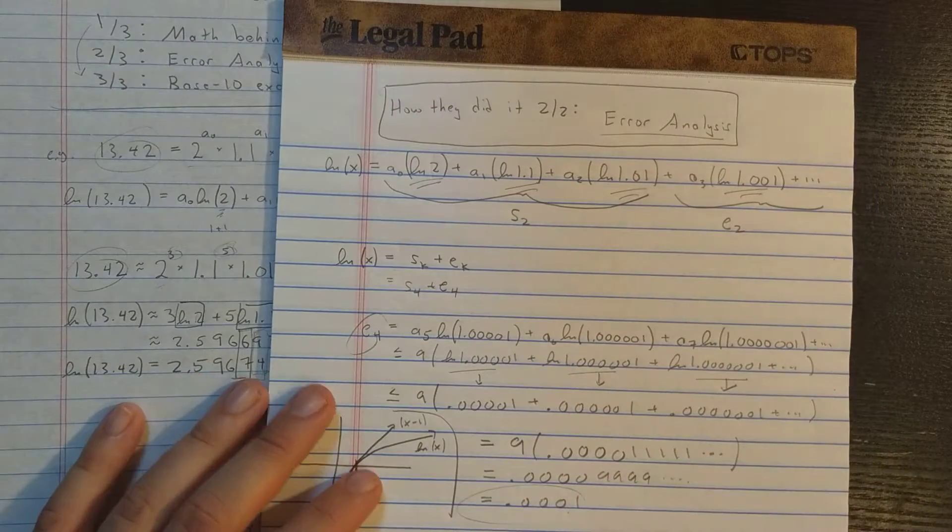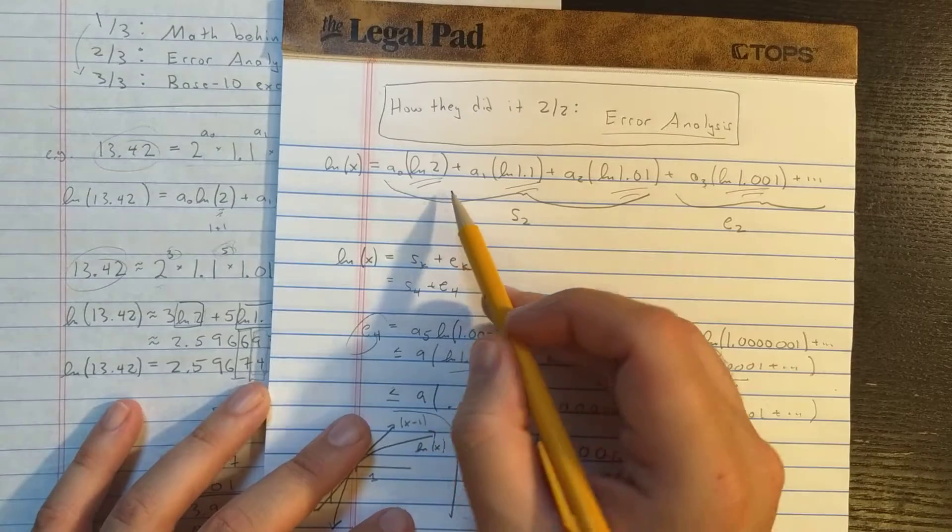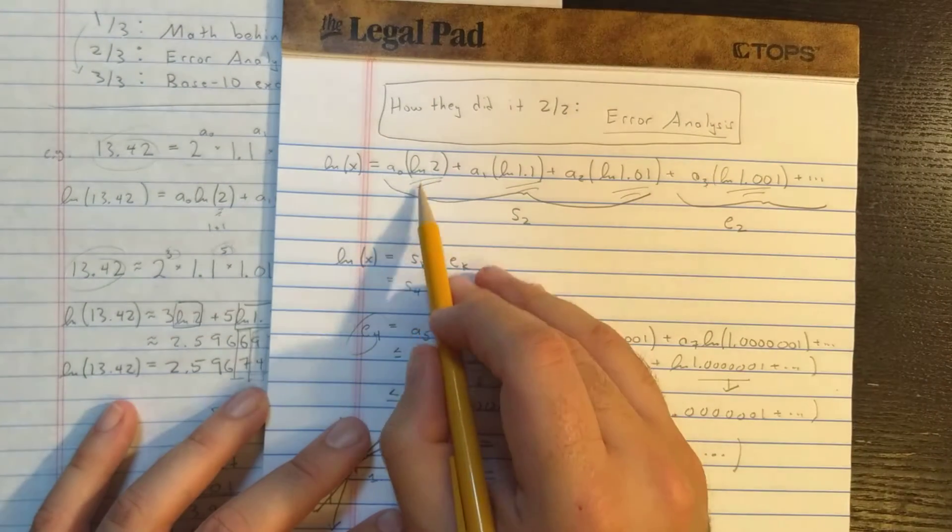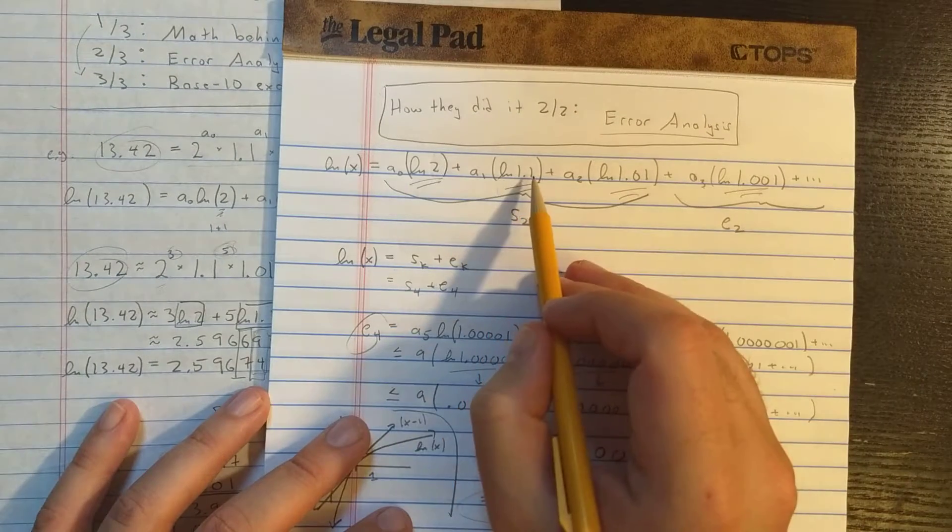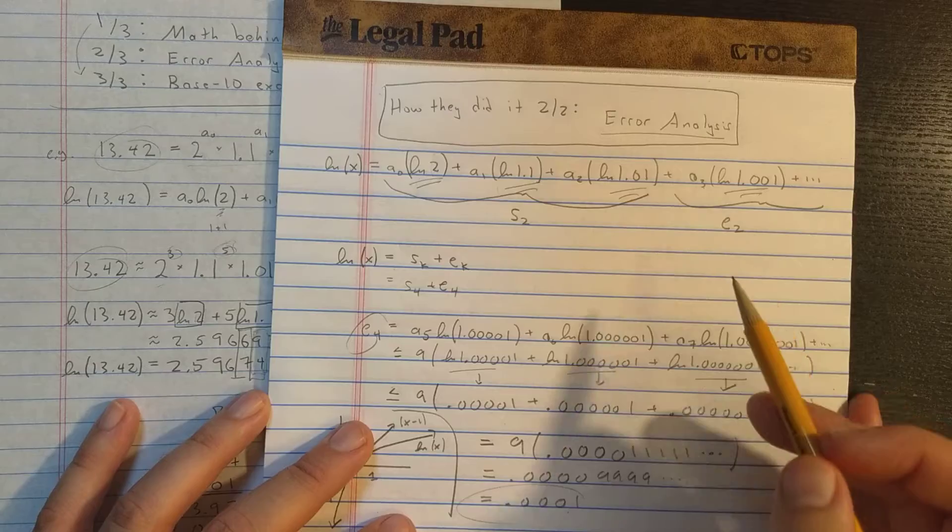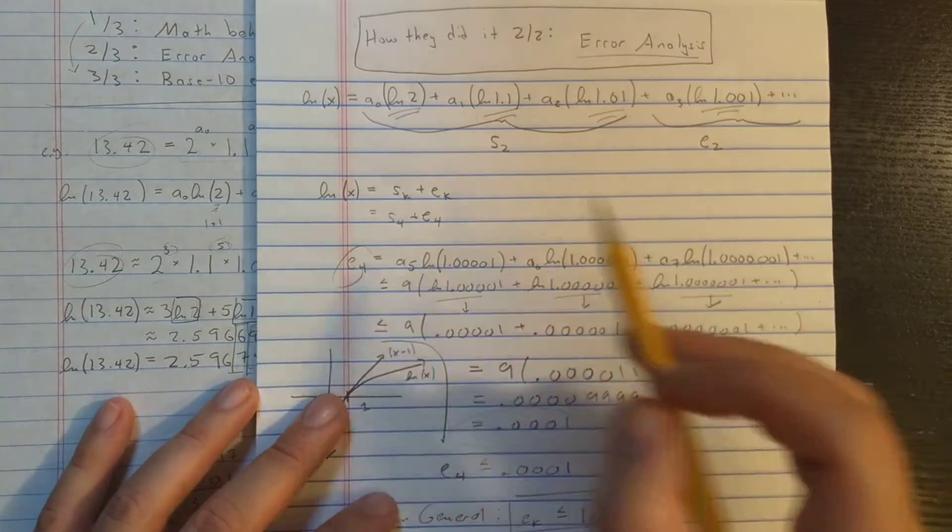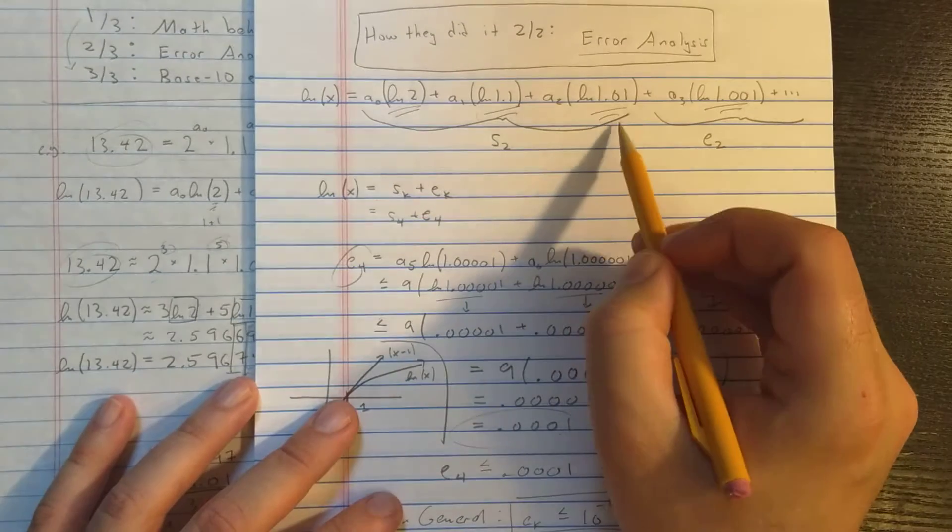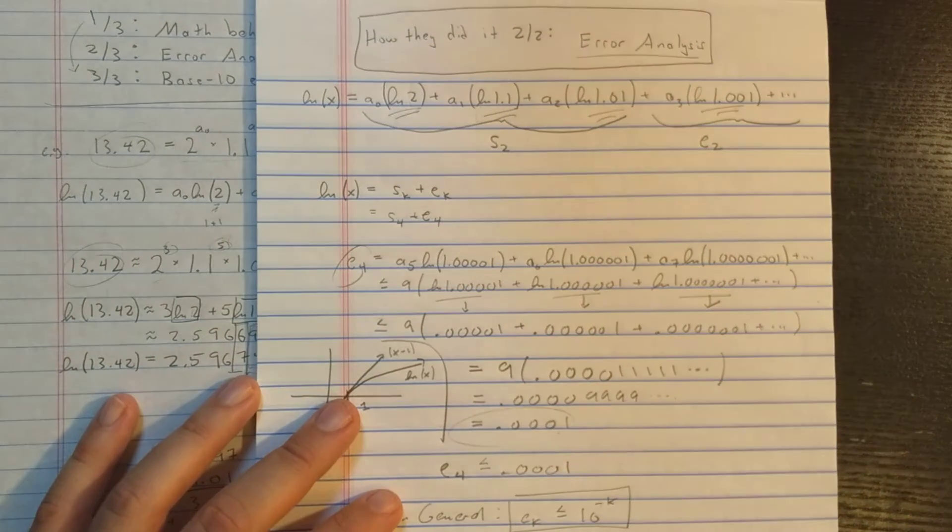Now, another thing I'm going to note is that if you want to compute the base 10 logarithm, all you need to do is replace all of these constants with their base 10 version. So base 10 log of 2, base 10 log of 1.1, base 10 log of 1.01, and so on. If you do that, we know that each of those is essentially just divided by natural log of 10, which is about 2.3.